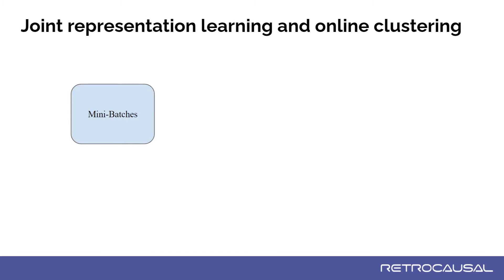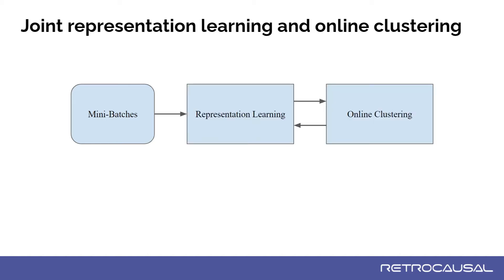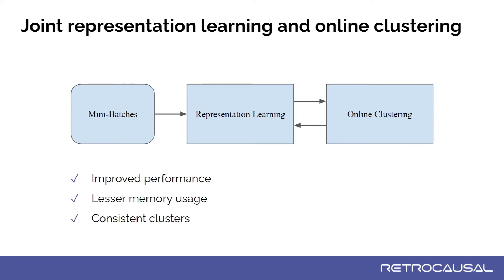In contrast, we combine representation learning and clustering steps into a single joint framework. Specifically, we process a small batch of frames at a time and simultaneously learn representations and perform clustering in an online manner. This leads to improved accuracy while requiring much less memory, and yields consistent clusters due to feedback between the representation learning and online clustering modules.